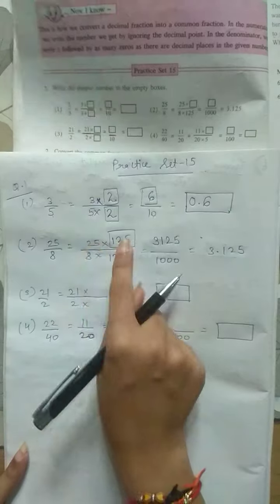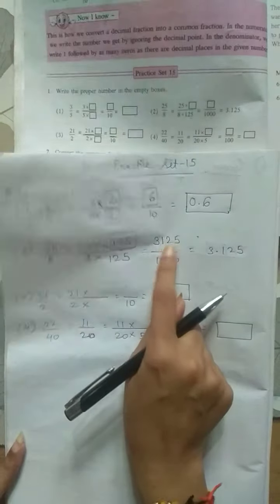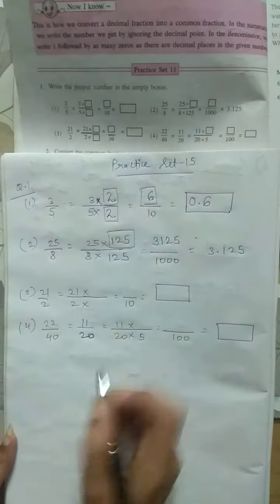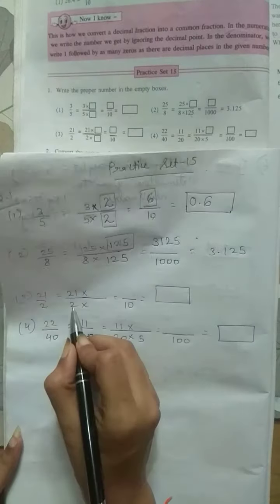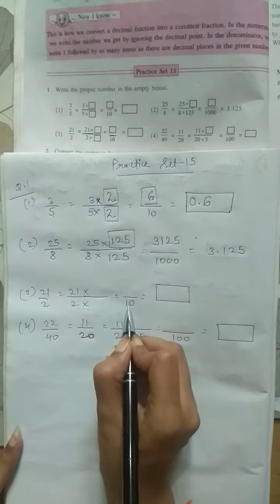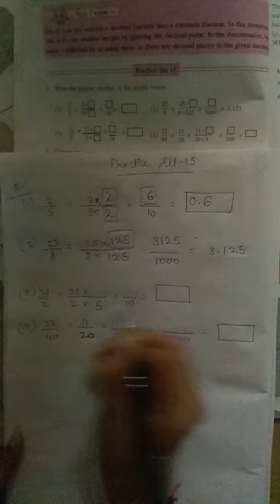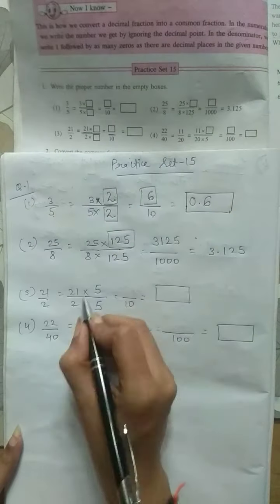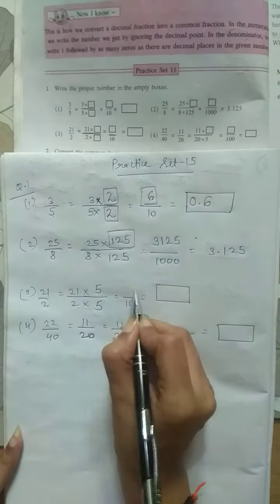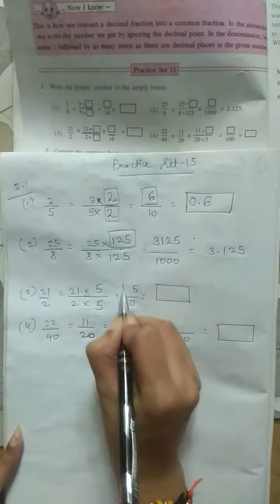You can multiply 25 and 125 and check. You will get this number. Next, 21 upon 2. Now again, 2 is being converted to 10. So 2 times 5 is 10, means in the numerator also 5. Let's multiply: 5 times 1 is 5, 5 times 2 is 10.